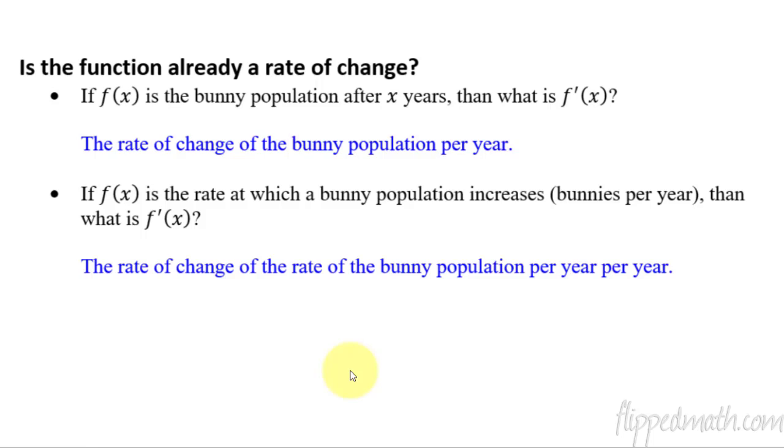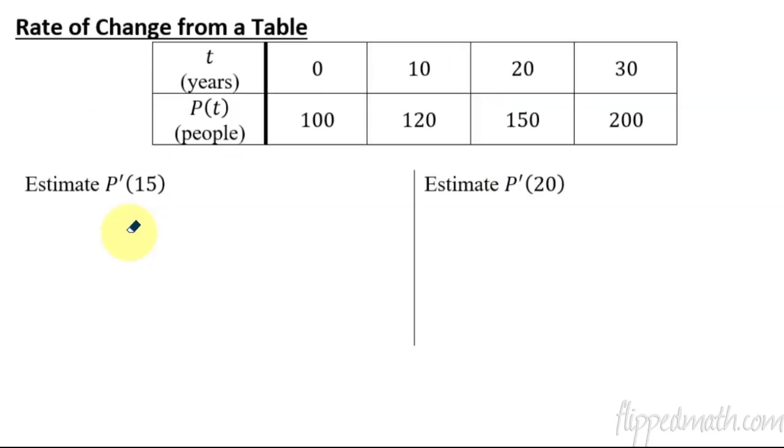Just be careful when you're reading the problems. Recognize if the function that they give you is already a rate or if it is not, and the derivative would give you the rate. Last part of our lesson: we're talking about rate of change from a table, which we have done before, but there's just a little twist to some things I want to show you. So here we have a table showing years and people, so this is probably like a population, maybe how many people after so many years. Now this is really small because it's only 100, 120.